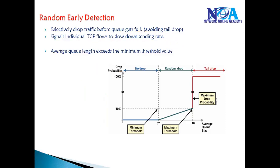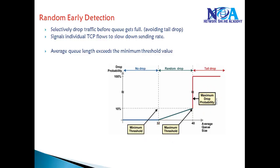In Random Early Detection, three different parameters are defined: the minimum threshold value, the maximum threshold value, and the maximum drop probability value. This RED mechanism is going to work only when the hardware queue is full. If the queue is not full, none of these methods will start.